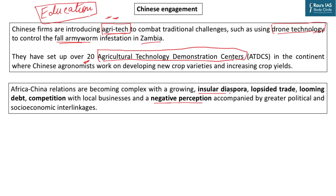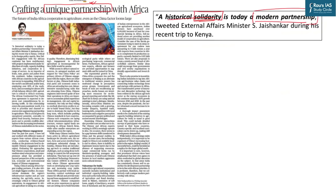India has not developed a planned strategy linking education cooperation with agriculture and agri-tech — this is where we need to speed up. There is a chance here because there is increased negative perception of China in Africa: Chinese investors have an insular diaspora with little cooperation with local African farmers, there is lopsided trade, threat of debt, and increased competition. We already share solidarity with Africa and India has much more mutual trust and respect. It is a natural progression to move from agriculture cooperation to agri-tech — crafting a truly unique partnership with Africa.